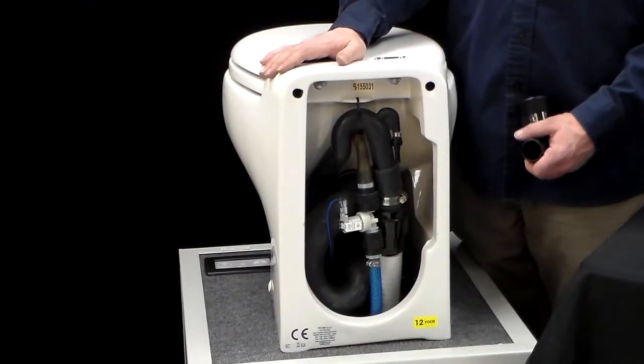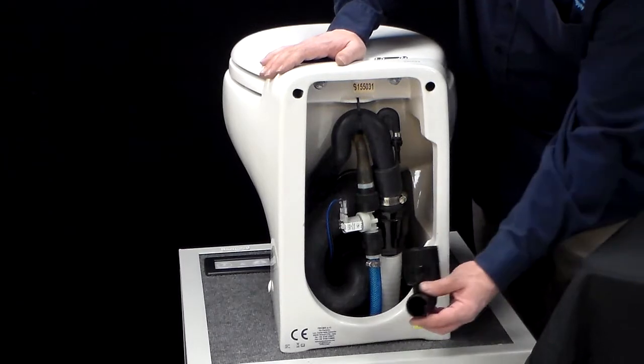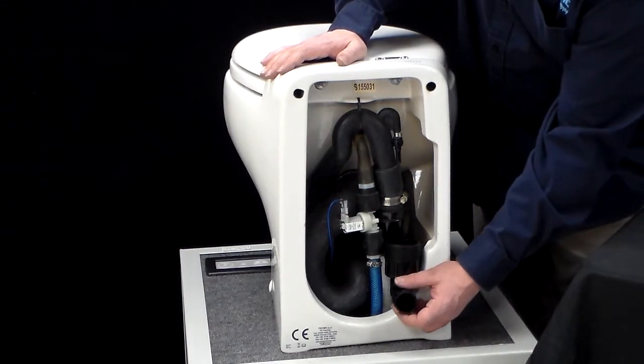The Tecma Silence can be plumbed in below floor applications with the straight fitting as you see here, or an elbow can be used for above floor situations where you can exit out the right or left or through the bulkhead.